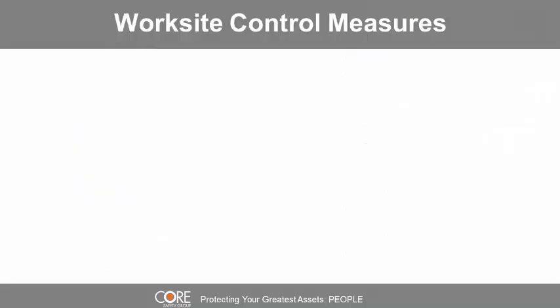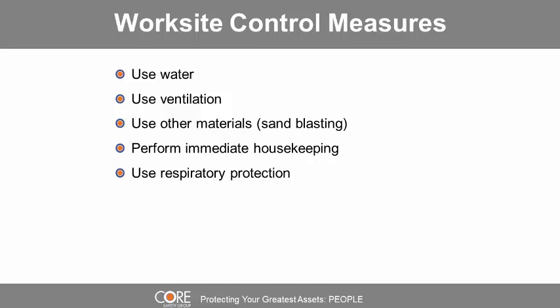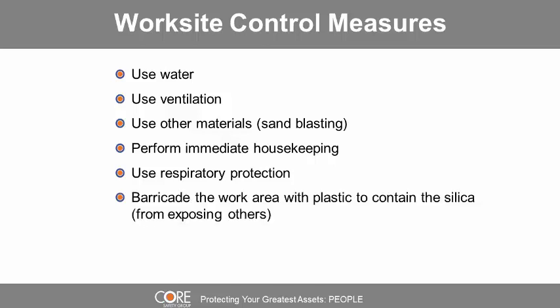Examples of worksite control measures include use of water, use of ventilation, use of alternate materials such as alternate material for sandblasting, performing immediate housekeeping, using respiratory protection, and barricading the work area with plastic to contain silica from exposing others.